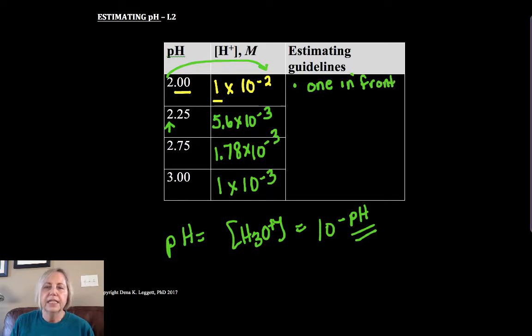If there's a 1 in front, it's pretty straightforward. The pH is equal to the negative power. So we've got, in our case, a negative 2, so the pH would be equal to 2.